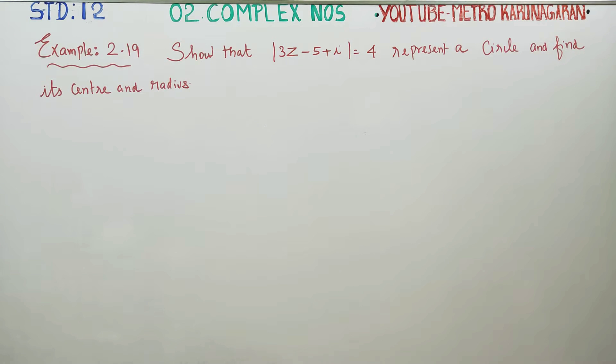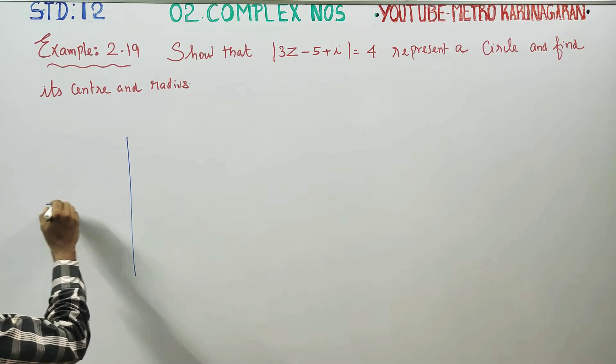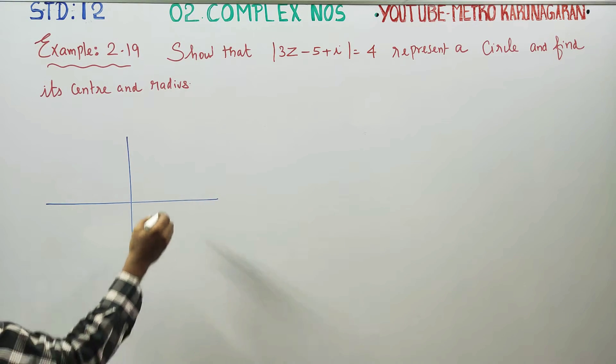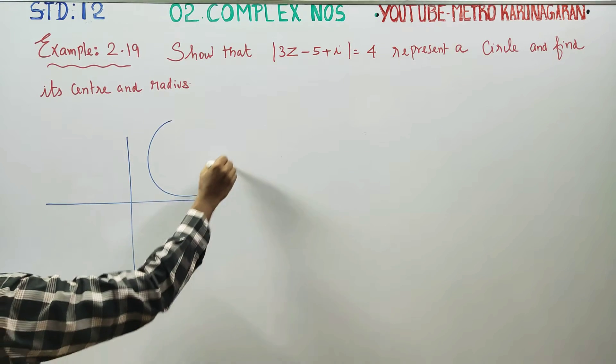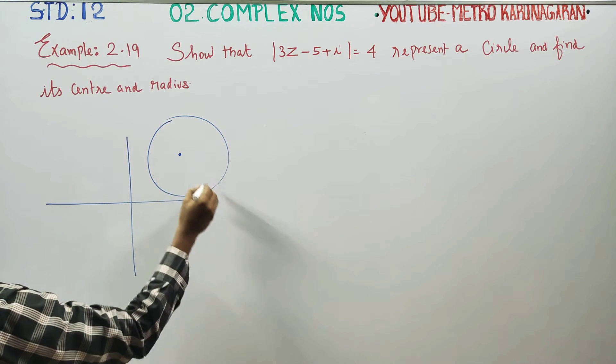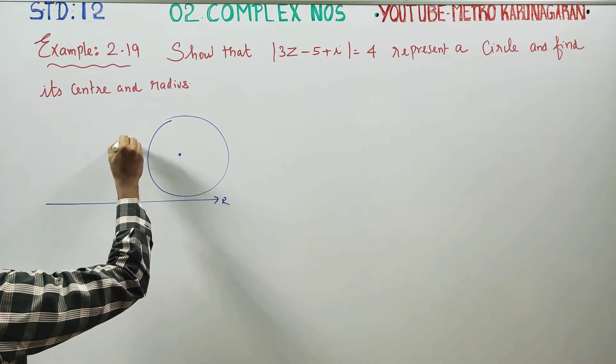If you have a complex number, you can see an equation where you have a circle. This is the real axis, this is the imaginary axis.